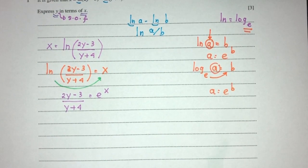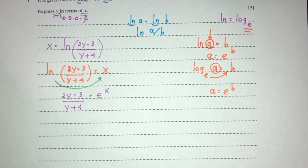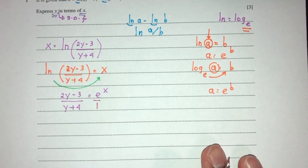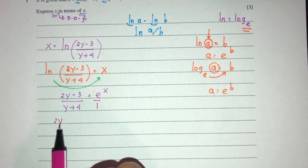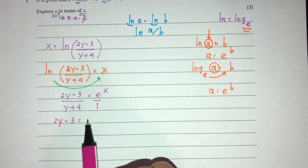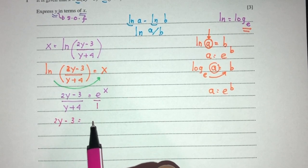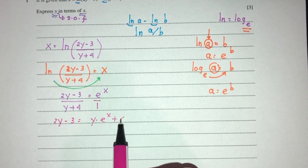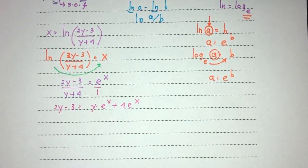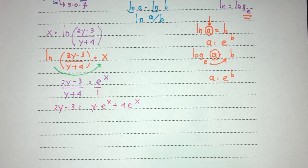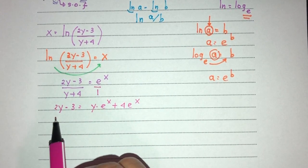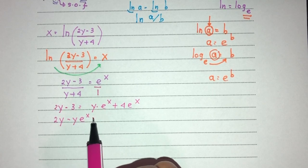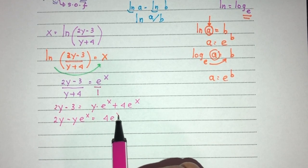We are one step closer, so we have to keep going. We can cross-multiply: you will have 2y minus 3 equal to e^x times (y plus 4), which becomes y·e^x plus 4e^x. Don't forget, we are trying to make y the subject, so group all the y terms together. Here you have 2y minus y·e^x equals 4e^x plus 3.